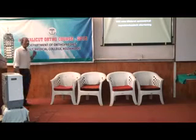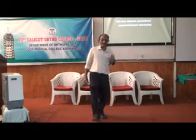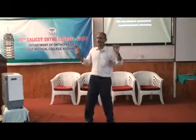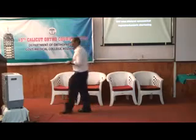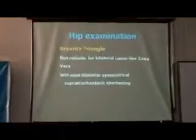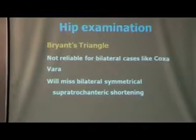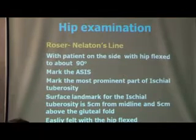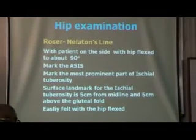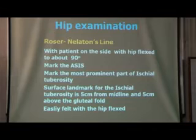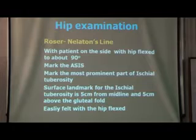Bryant's triangle is not reliable in a bilateral case. If it is a bilateral coxa vara symmetrically — say 110 degrees on both sides — and you have done everything in perfectly symmetrical position, there is no discrepancy on Bryant's triangle measurement. This is because your reference on the other side is not normal. In a bilateral case, you cannot do measurement using Bryant's triangle; you need to rely on Nelaton's line.